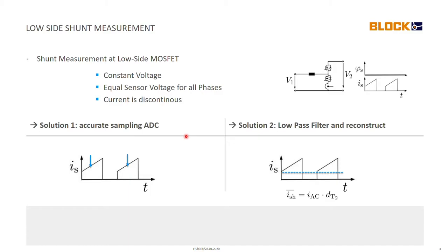There are basically two solutions that exist for this. Solution 1 is the one that is currently used in all applications. In applications where we use a low side shunt measurement, we just have a very precise sampling directly at the center of the turn on period of the bottom MOSFET and then we directly have the current that we want to measure.